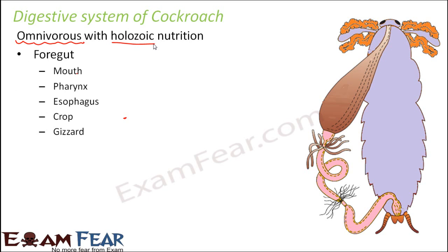Broadly, the digestive system is classified into three parts. When we talk about the digestive system, we are essentially talking about the digestive tract. The digestive tract is also known as the gut or alimentary canal — these are different names for the same structure.